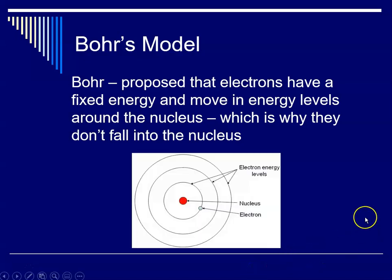And his model of the atom is often called the planetary model because you're picturing a nucleus at the center, and then the electrons have these very specific energy levels where they can occur.